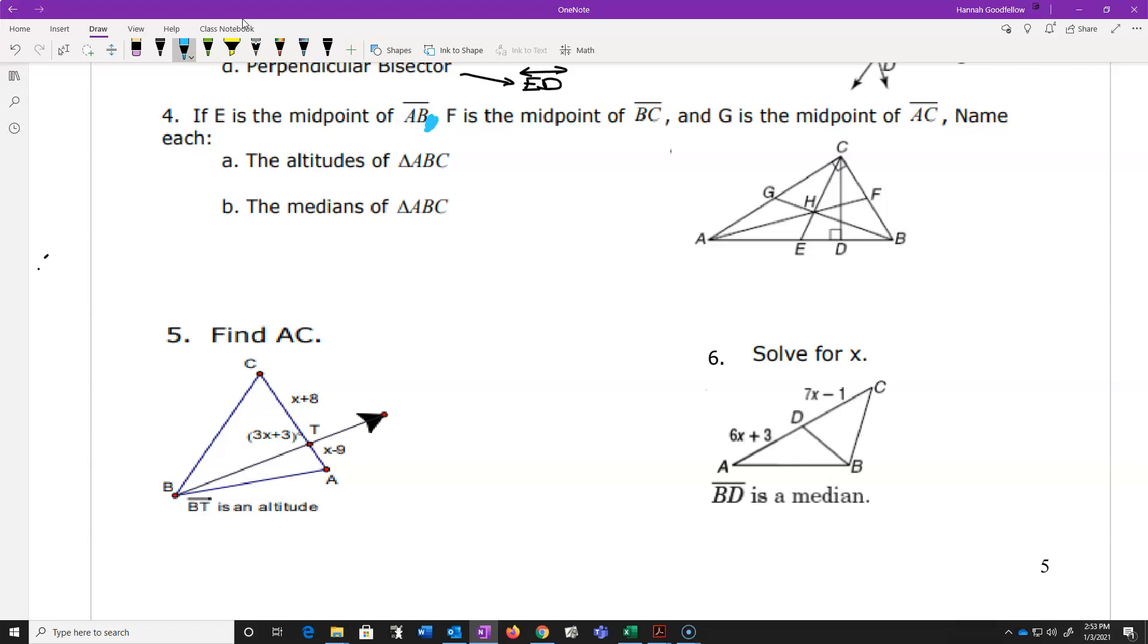If E is the midpoint of AB. Now, stop and think about that. If this guy is right in the middle, then that must mean that this length and this length are exactly the same size.